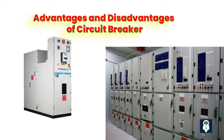Circuit breakers have a rapid response time and accurate fault interruption, making them ideal where immediate disconnection is essential. They are highly reliable and handle sustained or permanent faults more effectively than auto reclosers. However, circuit breakers require manual intervention to restore power after a fault, which can be time-consuming and cause longer outages. They also have a higher initial cost, and their immediate interruption of faults may lead to more frequent power disruptions in areas prone to temporary faults.